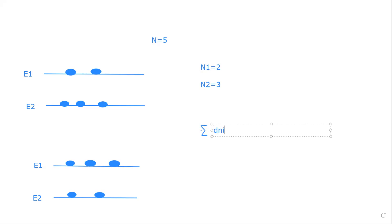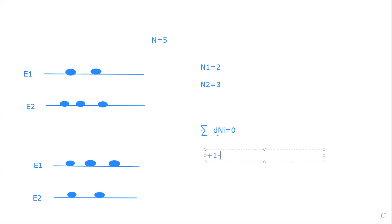Summation of dni must be equal to zero. This is the conservation law. To prove this: take the change in the number of particles in state 1 — initially there are two particles and finally there are three particles, so the change is plus one. For the second state, initially there are three and finally there are two, so the change is minus one. That is definitely equal to zero.